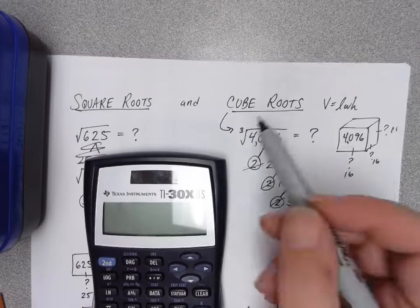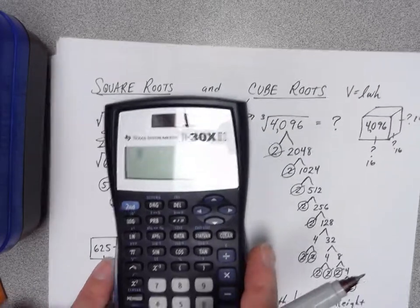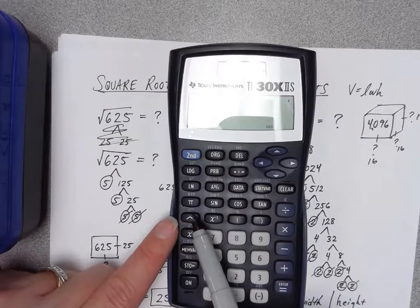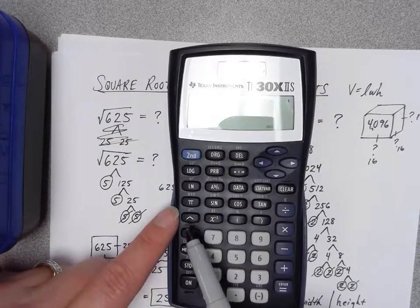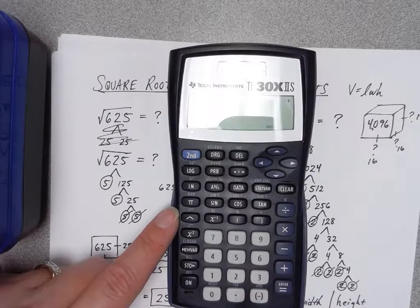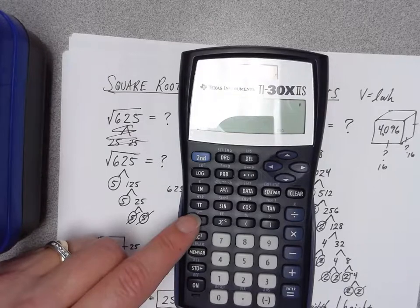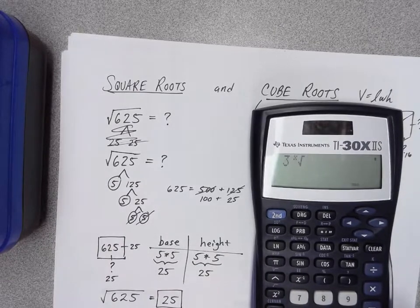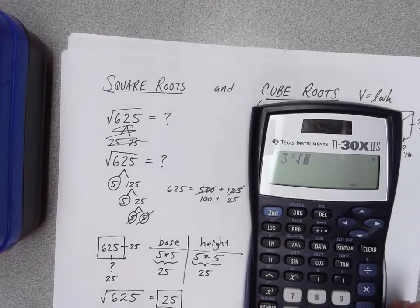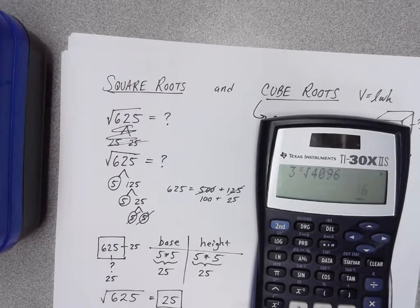For cube roots, it's a little special — remember the index of 3 out front. Use the special button above the insert key, which looks like a radical symbol with an X index. I want a cube root, so I type 3, press the second button and then the insert button. You'll see 3 appear as your index in front of the radical. Then type 4096 — that's the volume we're breaking into three equal groups — and press equals. We find 16: indeed, 16 is the cube root of 4096.